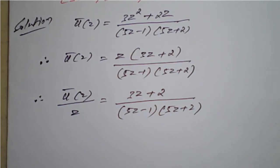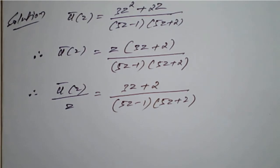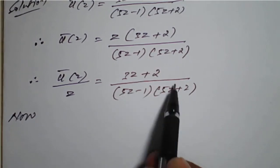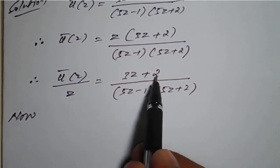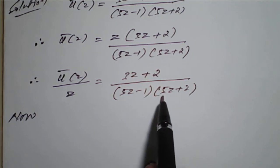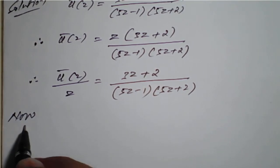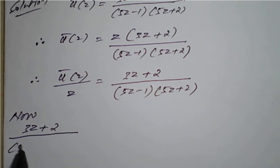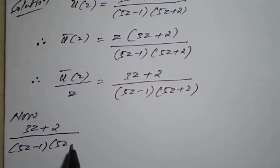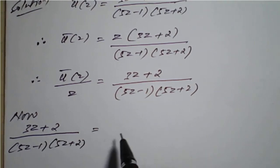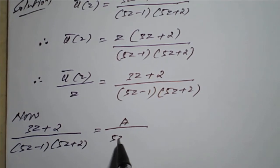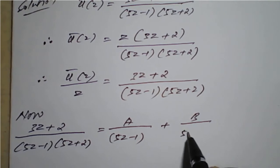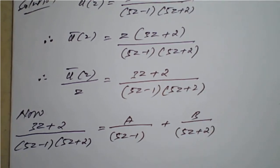Once we get this step, we can go forward with simplification of this fraction using partial fractions. The right-hand side function (3z + 2) divided by (5z - 1)(5z + 2) will be expanded by partial fractions as A divided by (5z - 1) plus B divided by (5z + 2).